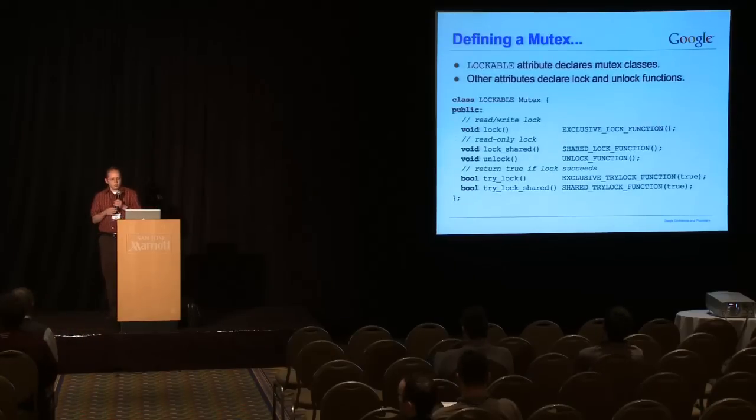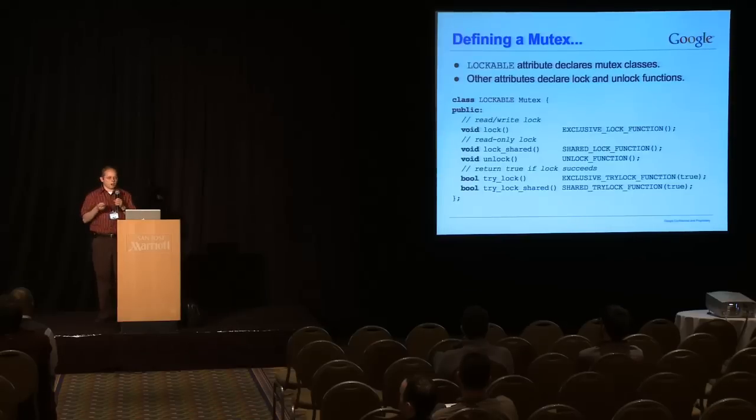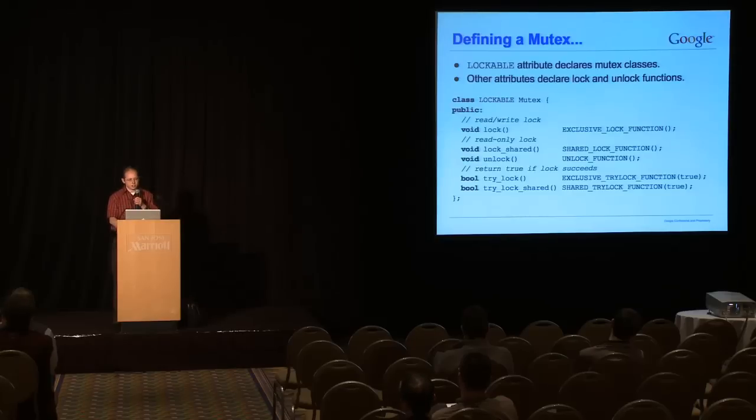Okay. So, this is what the mutex class looks like. This is, first of all, certain classes can be lockable. So, you put the lockable attribute on the class. You specify which functions lock the class, which functions unlock the class. And there are several different kinds of locking functions. You can get an exclusive lock, which allows read-write access. You can get a shared lock, which allows read-only access. And you can have that version in try-locks, where the return value specifies whether you manage to acquire the lock or not for locking state functions that can fail.